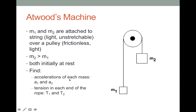I'll show how to do this using a very classic problem — one called an Atwood's machine. An Atwood's machine is simply two masses attached to ends of a string over a pulley. We will assume that the string is very light, so we don't need to worry about the mass of the string. We're also going to assume the string is rigid and will not stretch or change its length. We're also going to assume the pulley is frictionless on its axle and is very light, so the only masses we need to worry about are these two blocks.